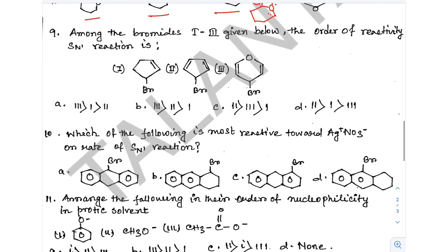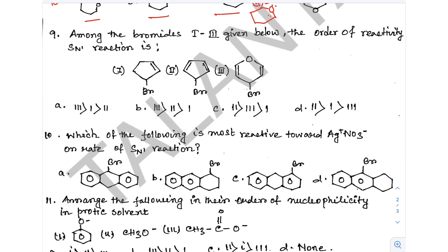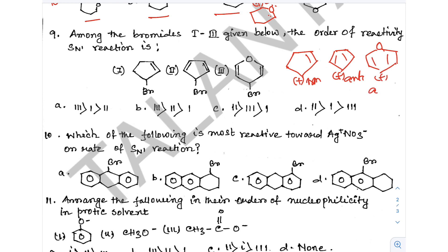Next, question 9a: Among the bromides 1 to 3 given, find the order of reactivity towards SN1. The corresponding carbocation for one structure is non-aromatic, another is anti-aromatic, and another involves a 6 pi electron conjugated system. The fastest is compound 3, the slowest is compound 1. Option 9a is the correct answer.